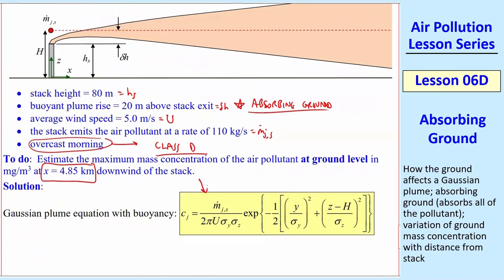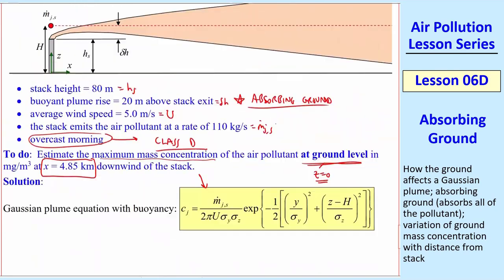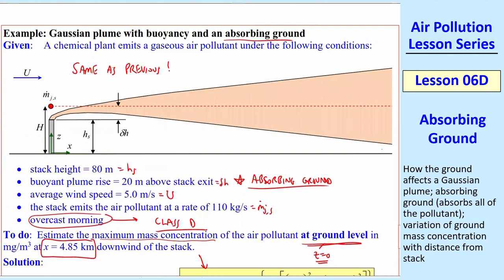And here's our equation. So everything is identical to what we had previously, except now we're worried about ground level. So this just means that z equals zero at ground level. And we're looking at the maximum mass concentration on the ground. We're somewhere further down here. We're actually far enough where this plume has hit the ground already. So our x is way back there. But if you're looking at this plume horizontally, it's spreading in the y and the z direction.